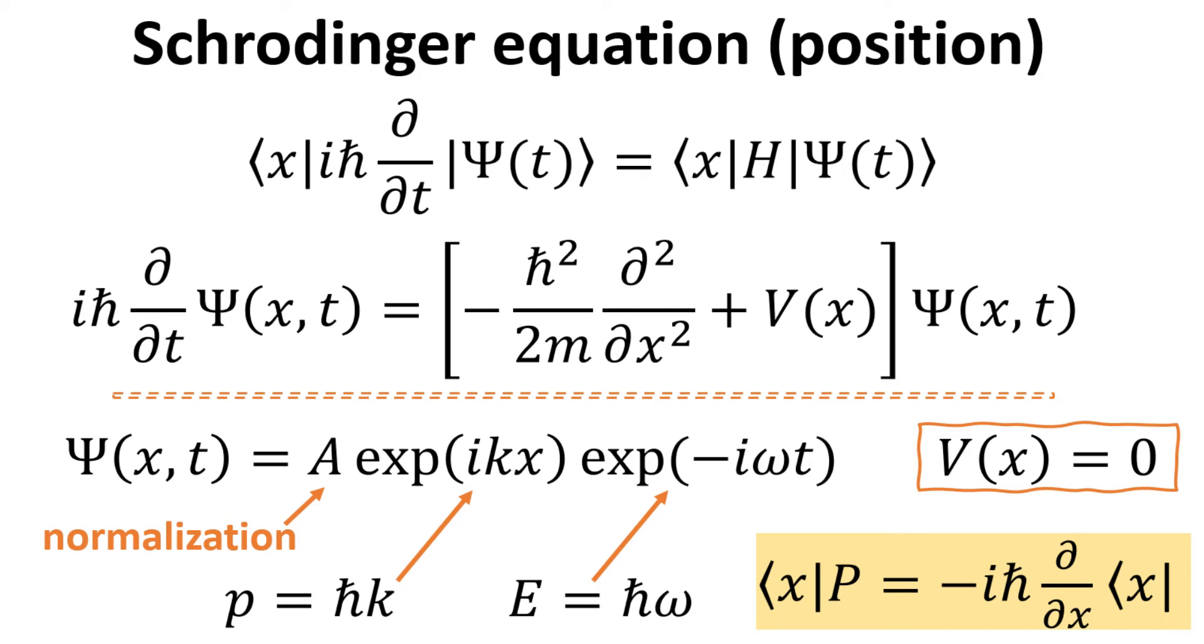In the simple case where the potential V(x) is 0, the solution of the Schrödinger equation is simply a plane wave, where k is the wave vector which is related to its momentum, and ω is the angular frequency and is related to its energy. In fact, the time and position dependence of the wave function in this case becomes separable. In general, when the Hamiltonian is time independent, this separability of the wave function is valid, thus the time dependence is simply just exponential −iωt as we have here.